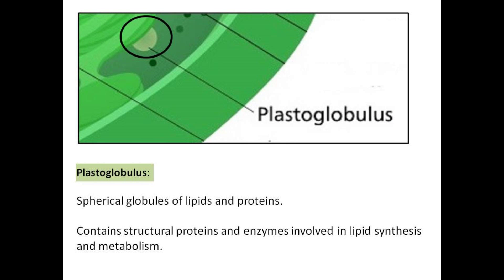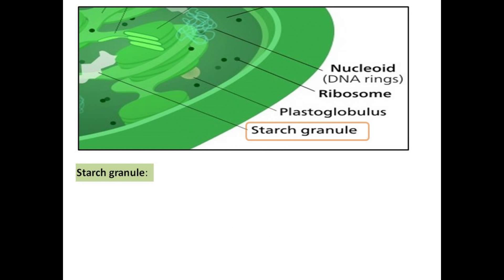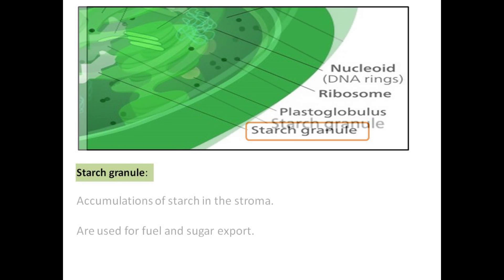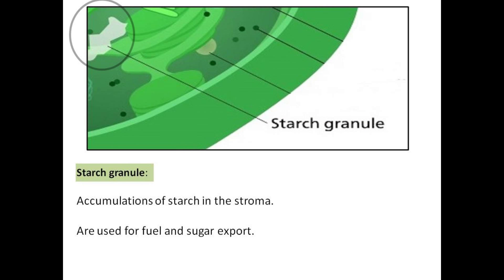Plastoglobuli are spherical globules of lipids and proteins. They contain structural proteins and enzymes involved in lipid synthesis and metabolism. Starch granules are accumulations of starch in the stroma and are used for fuel and sugar export.